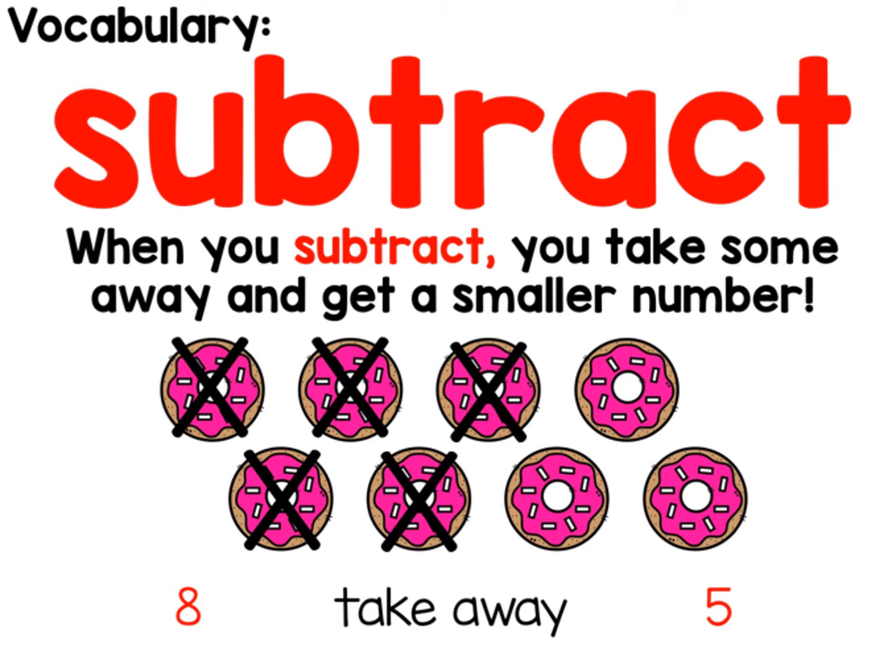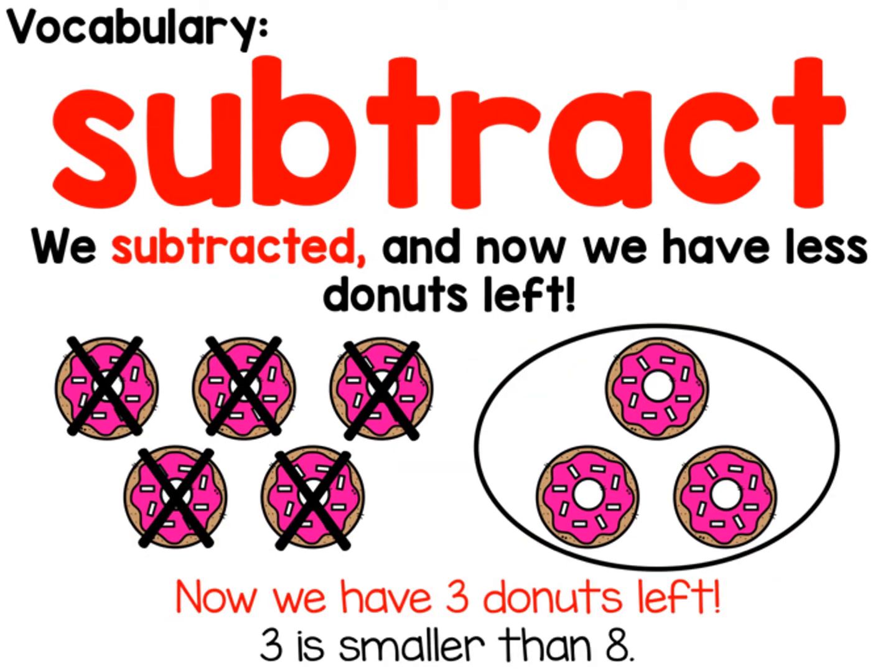Subtract. When you subtract, you take some away and get a smaller number. Eight take away five. We subtracted and now we have less donuts left. Now we have three donuts left. Three is smaller than eight.